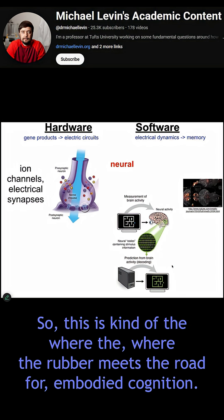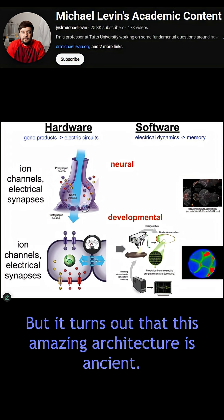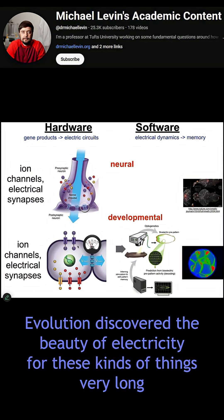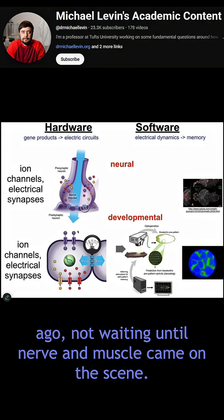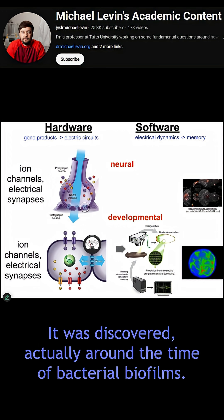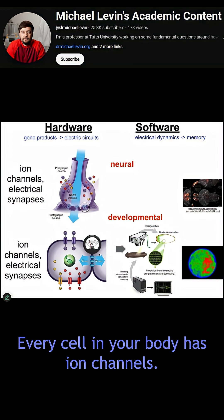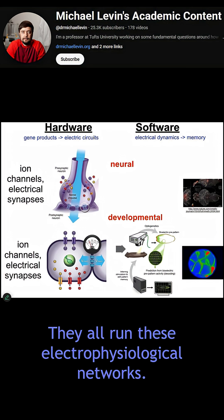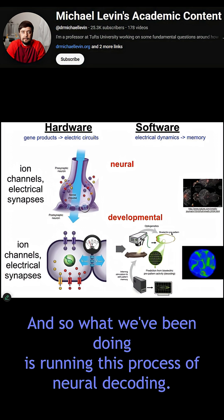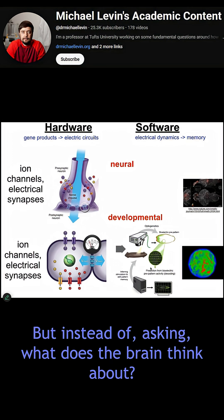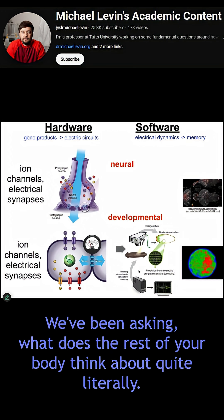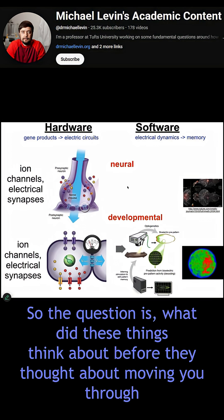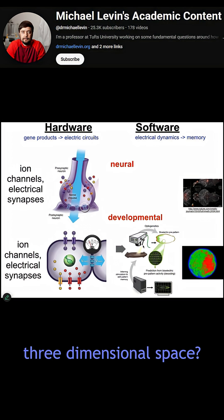This is where the rubber meets the road for embodied cognition. It turns out this amazing architecture is ancient. Evolution discovered the beauty of electricity for these kinds of things very long ago, not waiting until nerve and muscle came on the scene — it was discovered around the time of bacterial biofilms. Every cell in your body has ion channels; most cells have electrical synapses; they all run these electrophysiological networks. So what we've been doing is running neural decoding, but instead of asking what the brain thinks about, we've been asking what the rest of your body thinks about — quite literally. What did these things think about before they thought about moving you through three-dimensional space?